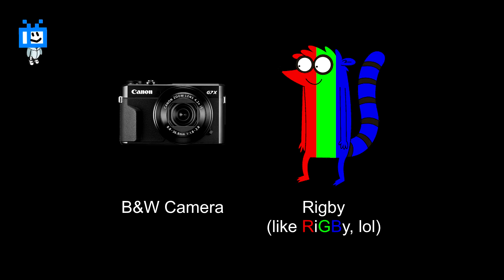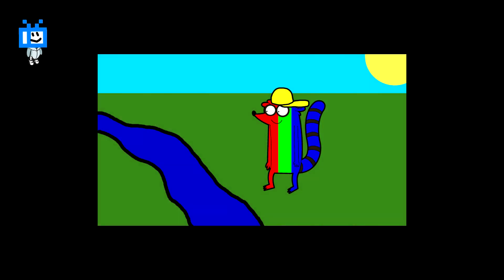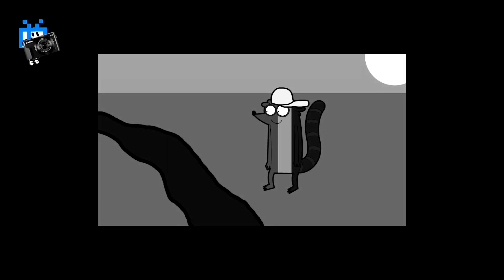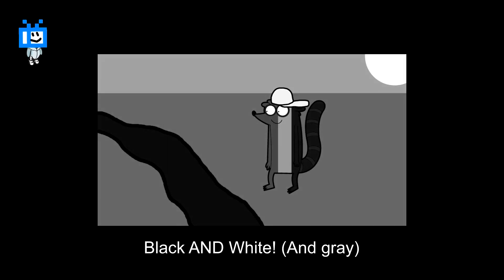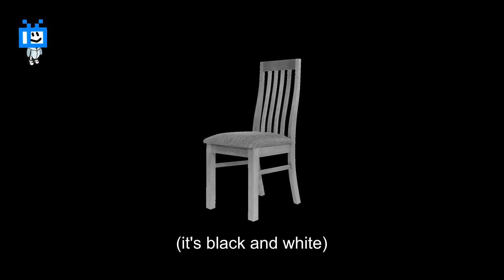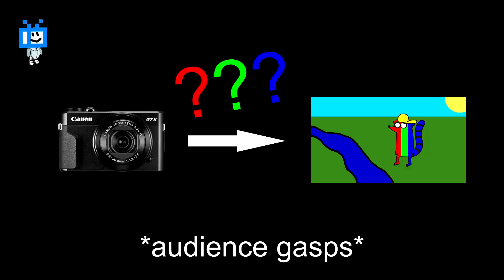This is a black and white camera, and this is Rigby. Now Rigby is standing in a nice field, so why don't we take a picture of him? It's black and white — but what if I told you, and you might want to sit down for this, we could take color pictures before.